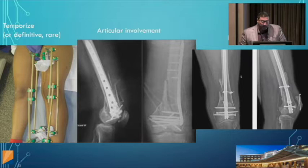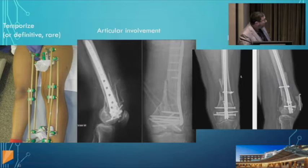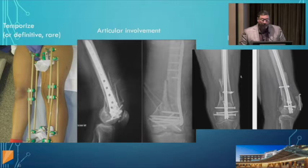Here's an example of a patient's injury with an external fixator on the left, and the definitive treatment with a plate and screws on the right — AP and lateral views. Cerclage wires are generally not preferred in fracture treatment because they're thought to disrupt the blood supply to the fragment, potentially preventing healing.